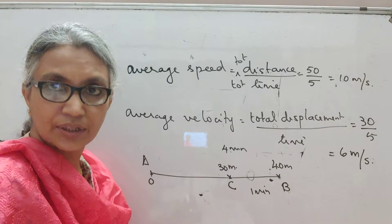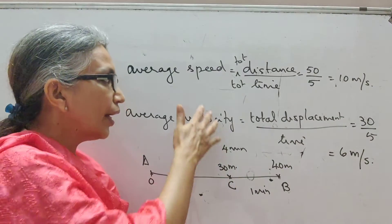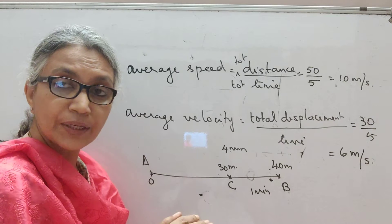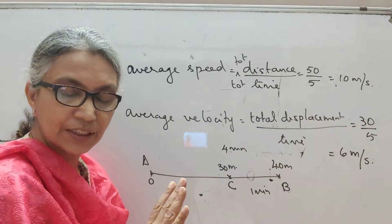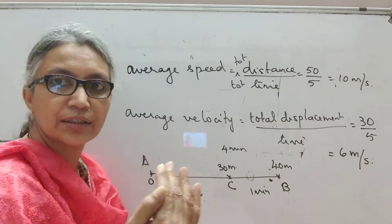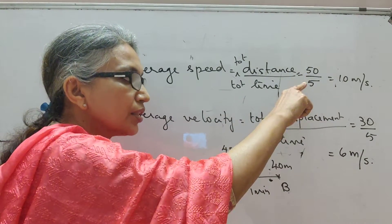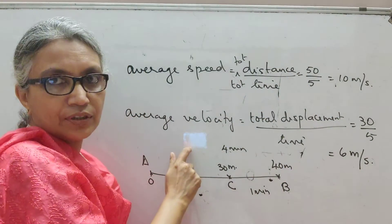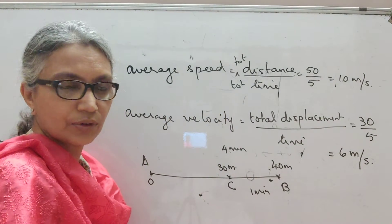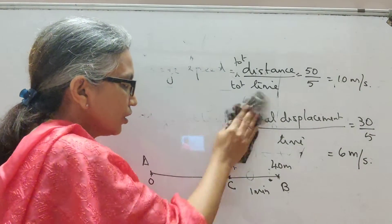With this discussion, you would have now realized that displacement and distance can be equal, which means average speed and average velocity can be equal. But displacement can never be greater than distance — distance will always be greater than or equal to displacement. Similarly, average speed will always be greater than or equal to average velocity.